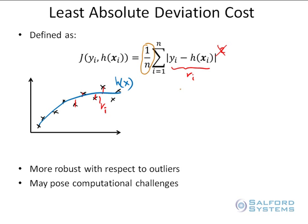The nice property of the Least Absolute Deviation cost function is that it is more robust with respect to outliers. When you have an outlier record, instead of taking the squared residual, you take it in absolute value, so you minimize the impact that the outlier can make in contributing to your loss function, and things work much nicer in this setting.